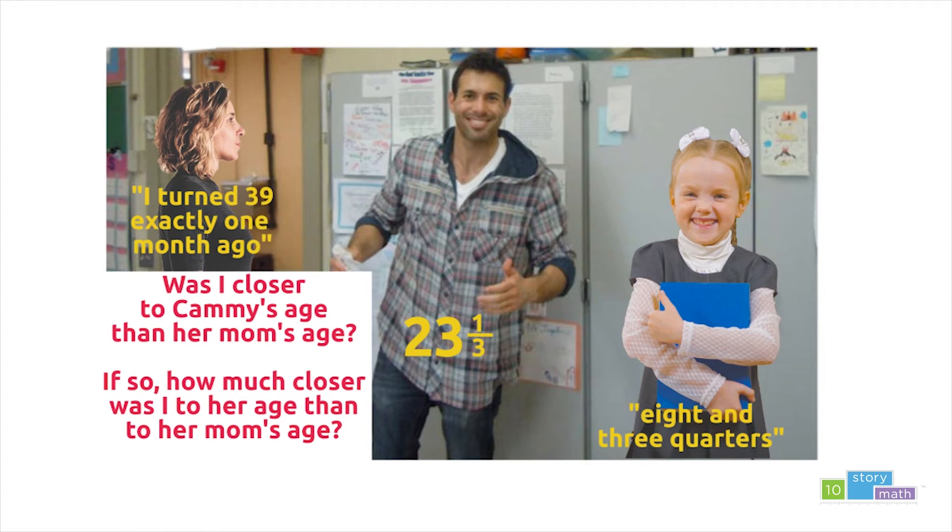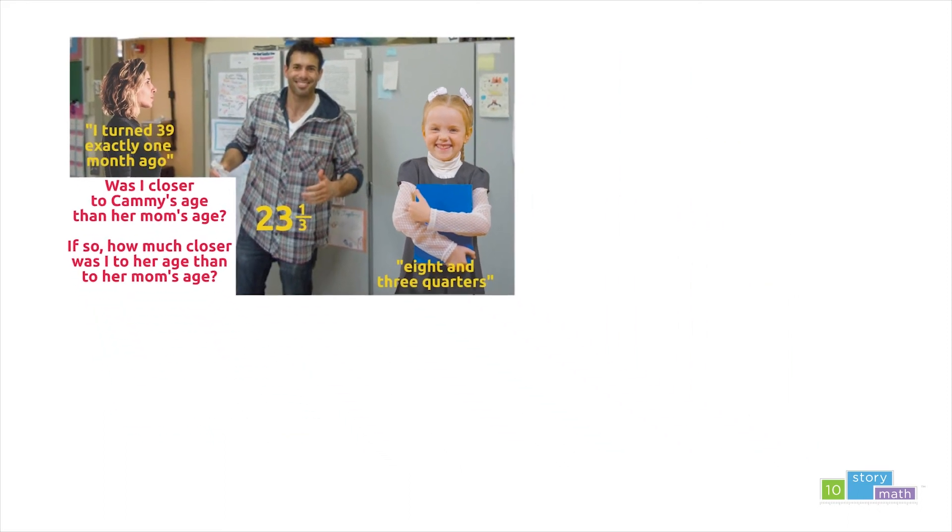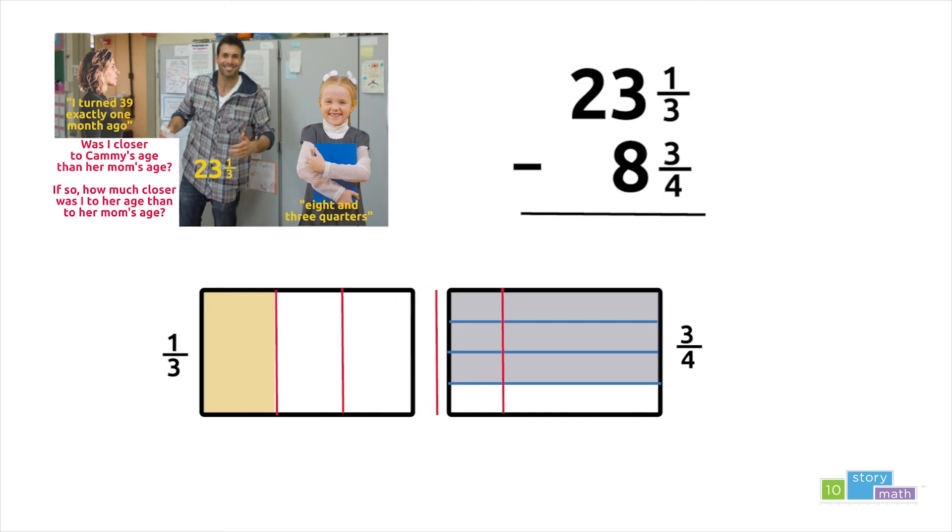In order to figure out the differences in our ages, I first used subtraction. To calculate how much older I was than Cammie, I subtracted eight and three quarters, also known as eight and three fourths, from 23 and a third. Because they have different denominators, our first step is to find a common denominator.